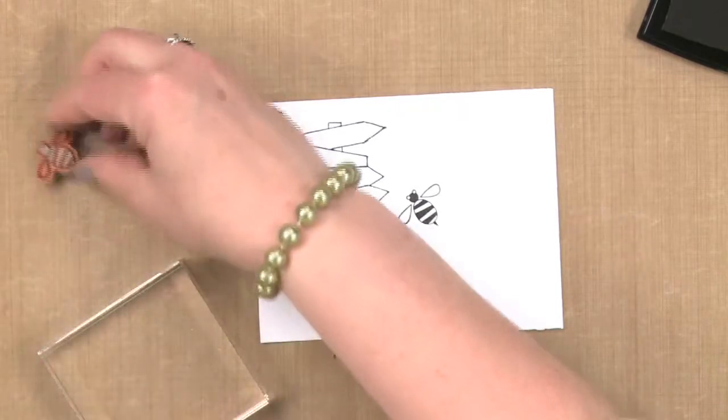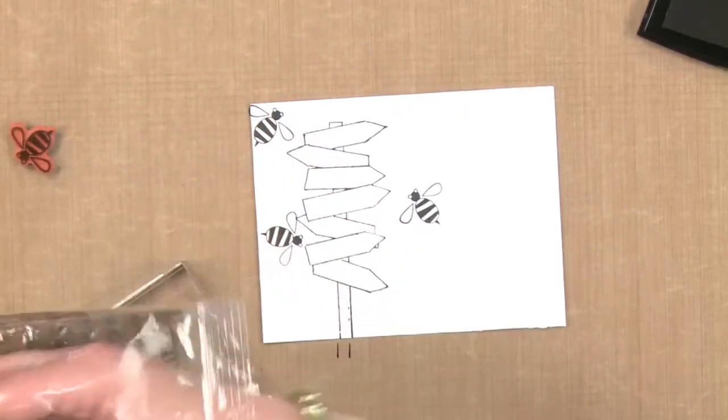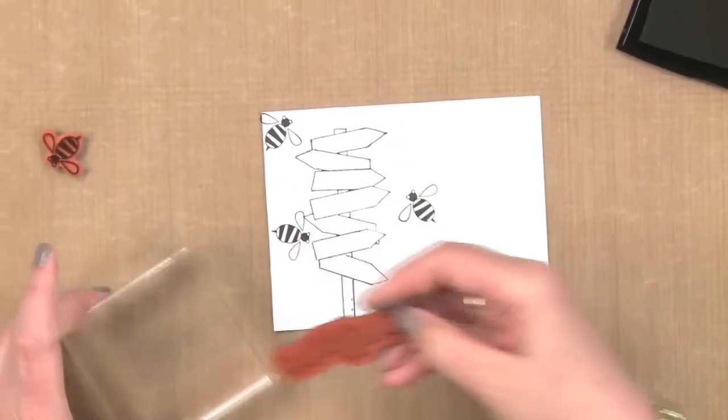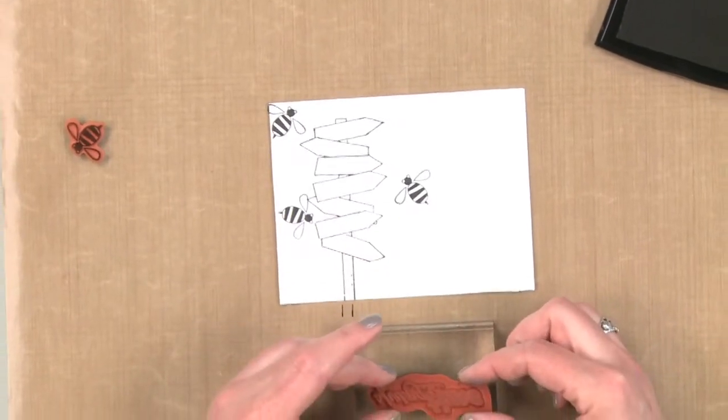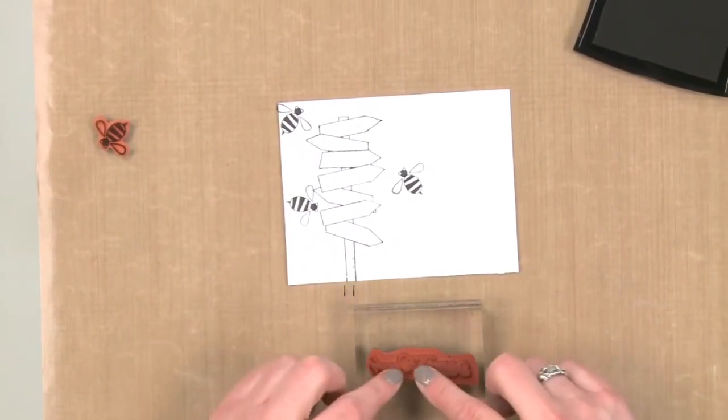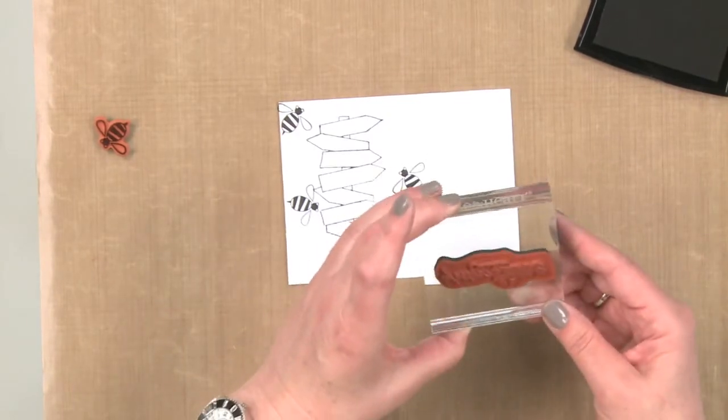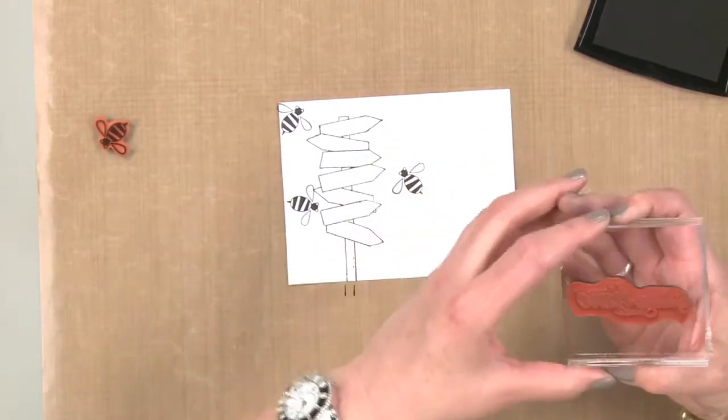The last thing I'm going to do is grab the sentiment that I want. And this sentiment is also a cling. I'm going to place it on and you want to make sure that you know which direction it's going, that it's straight. Because with sentiments, it's all about getting them lined up perfectly.